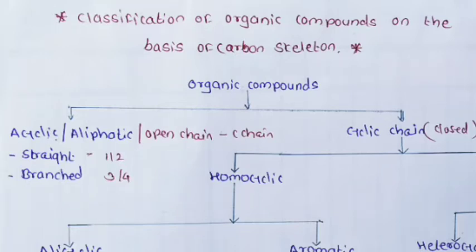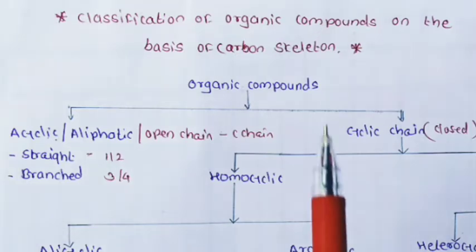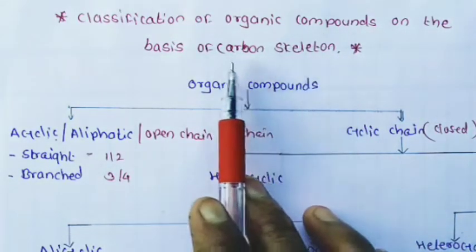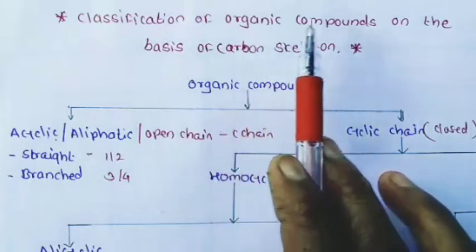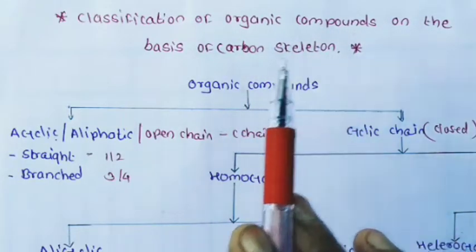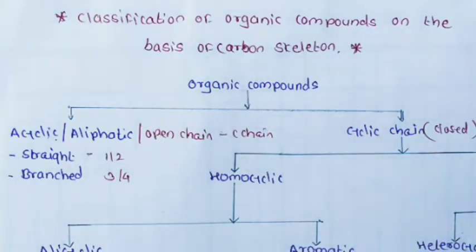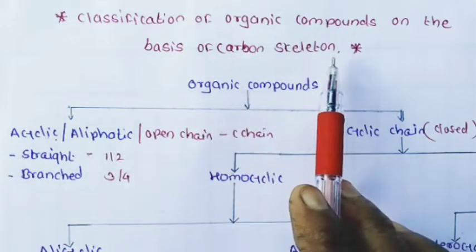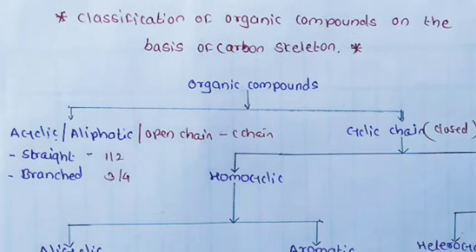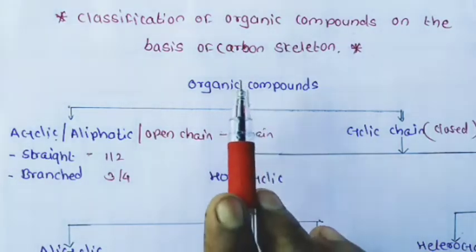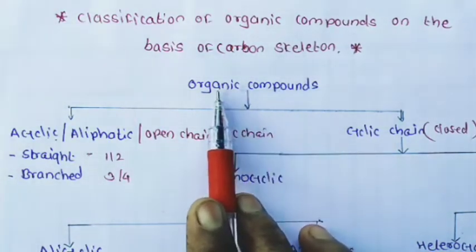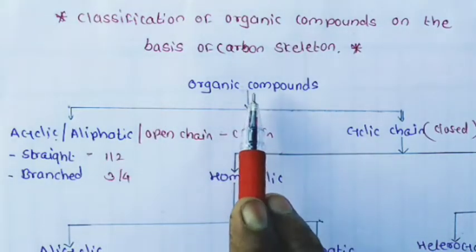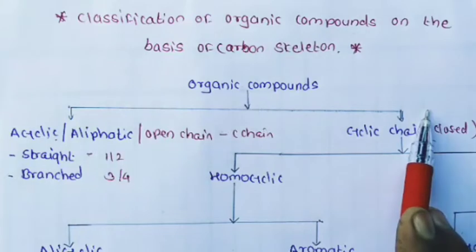Now we will study the first classification of organic compounds on the basis of carbon skeleton. This carbon skeleton of an organic compound decides the shape and size of organic compounds. This organic compound, which is made up of carbon atoms, is classified into two types.